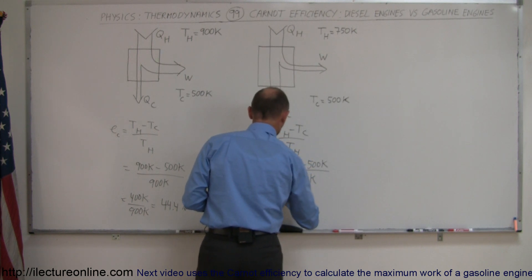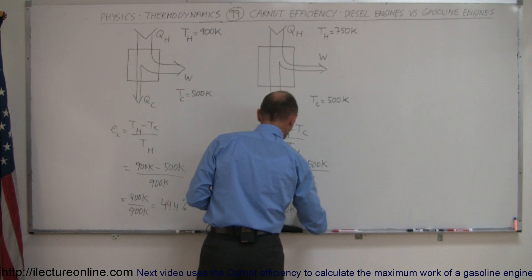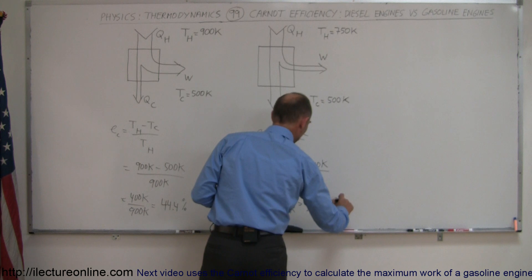This would be equal to 250 K divided by 750 K, and that looks like it's about one-third, or 33.3%.